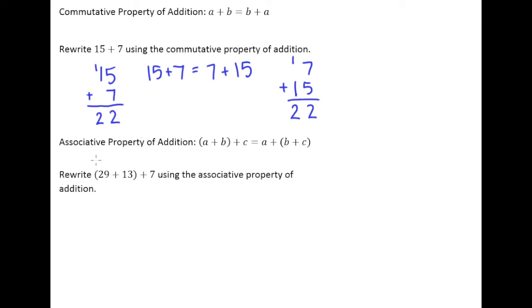The next property is the associative property of addition. And this one's a little less straightforward, but in some ways, for what we're doing with adding numbers, it's actually a little bit more practical to us at this point than the commutative property is.